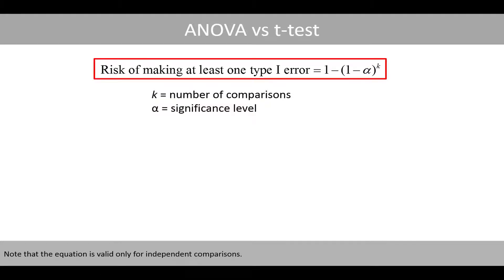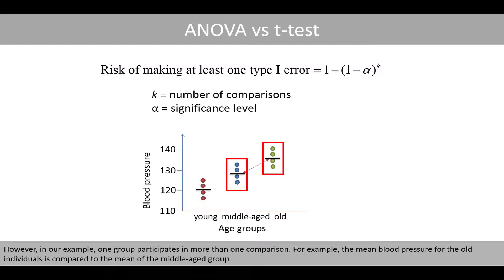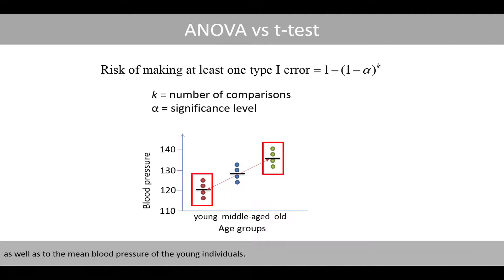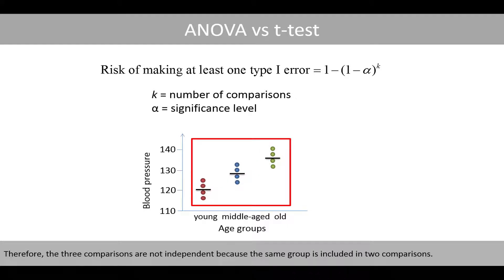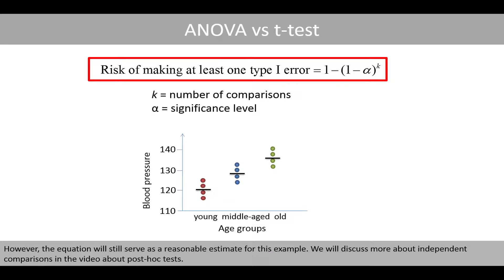The following equation can be used to estimate the risk of making at least one type 1 error, where k is the number of independent comparisons we make, and alpha is our significance level, which is usually set to 0.05. Note that the equation is only valid for independent comparisons. However, in our example, one group participates in more than one comparison. For example, the mean blood pressure for the old individuals is compared to the mean of the middle-aged group, as well as the mean blood pressure of the young individuals. Therefore, the three comparisons are not independent because the same group is included in two comparisons. However, the equation will still serve as a reasonable estimate for this example. We'll discuss more about independent comparisons in the video about post-hoc tests.